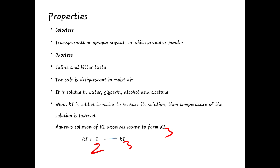When potassium iodide is added to water to prepare its solution, the temperature of the solution is lowered. An aqueous solution of potassium iodide dissolves iodine to form potassium triiodide (KI3): KI + I2 → KI3.